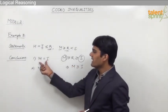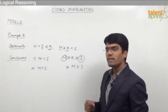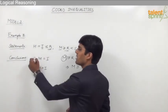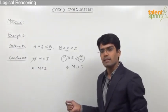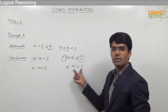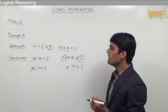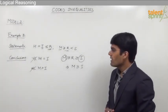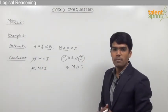Looking at conclusion 1: it says m = i. Since we know m ≥ i, we cannot simply say m = i, so conclusion 1 is false. Conclusion 2 says m > i. But the correct relationship is m ≥ i, so conclusion 2 is also false on its own — it only considers greater than, but not greater than or equal to. So both conclusions 1 and 2 are independently false.